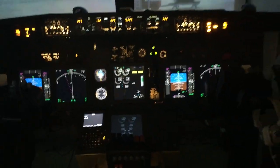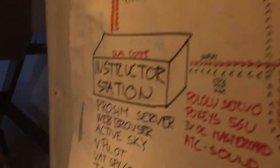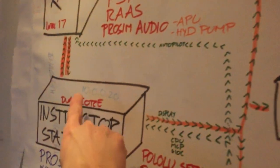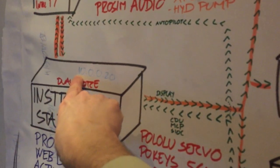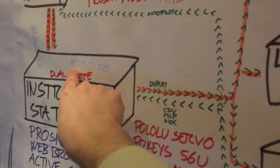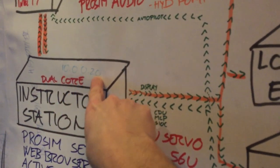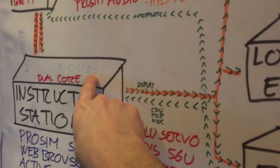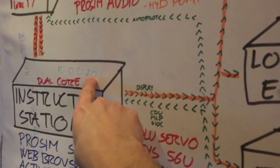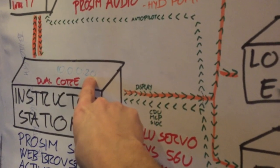Let me run through how this works. I have defined the IP address of this computer as a fixed address — it will always be 10.0.0.20.